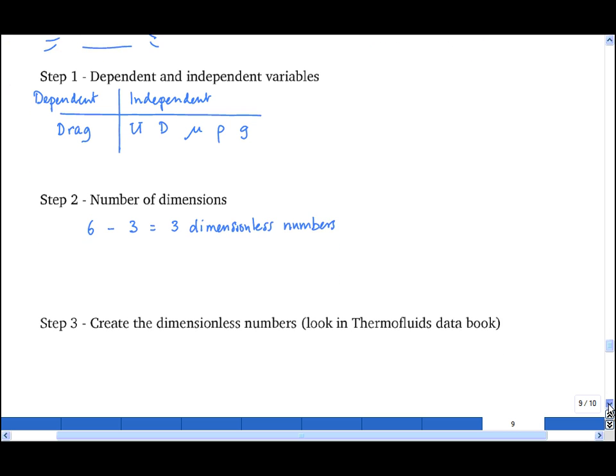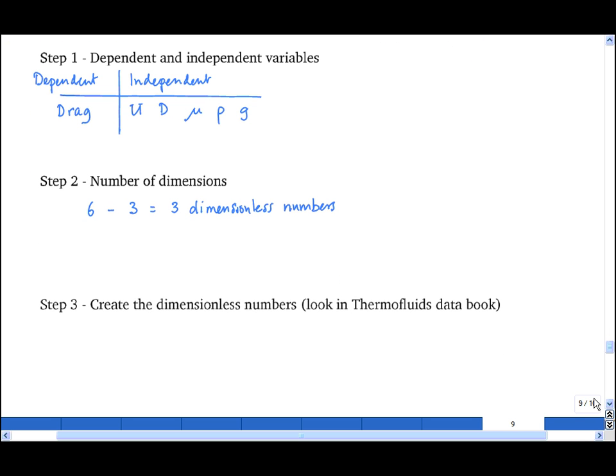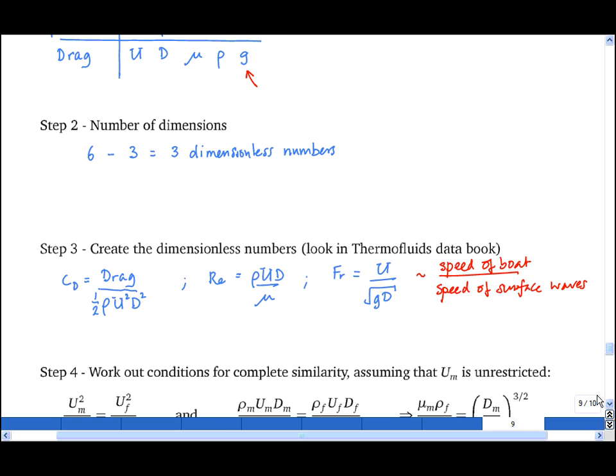Now we create these dimensionless numbers, bearing in mind we want to keep them conventional where possible. Obviously we have a drag coefficient. We have a Reynolds number. And now we need to include an independent parameter involving g. The sensible choice here is the Froude number, defined as u divided by the square root of gD. You can think of this in different ways. It's a bit like a Mach number in that it measures the speed of the boat relative to the speed of surface water waves. Or if you prefer, you can square top and bottom and multiply by ρ. Broadly speaking, we have a ratio of dynamic pressure to hydrostatic pressure, where that assumes that D, the size of the boat, is related to the height of the waves that it generates.